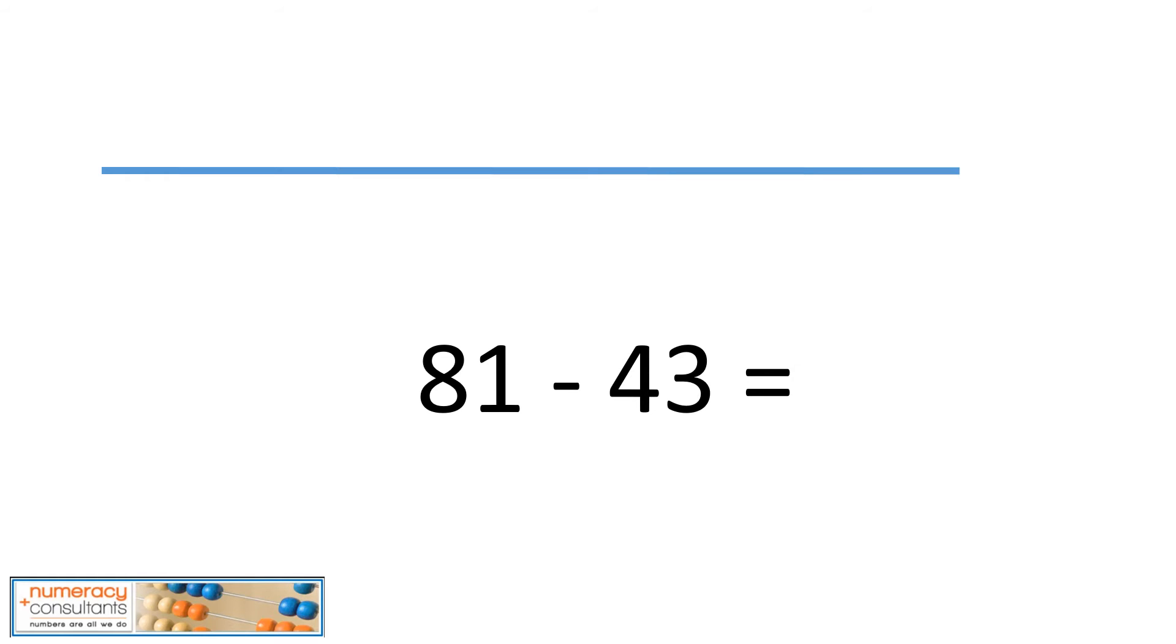We're going to go ahead now and do another problem: 81 minus 43. We know the routine by now. We're going to go ahead and start by putting 81 on our number line. And now we're going to break down 43 and do 40 plus 3. And we have to ask ourselves this question: how many jumps of 10 are in 43?